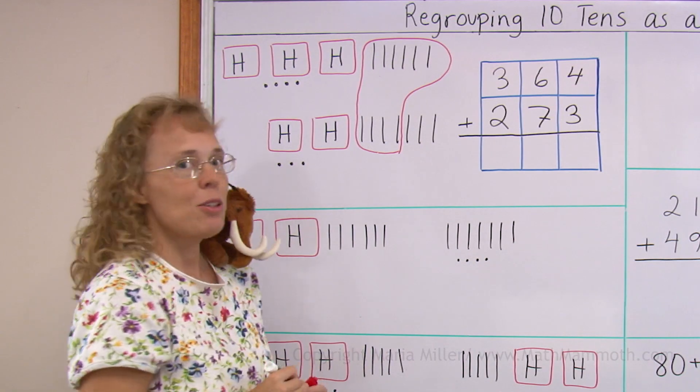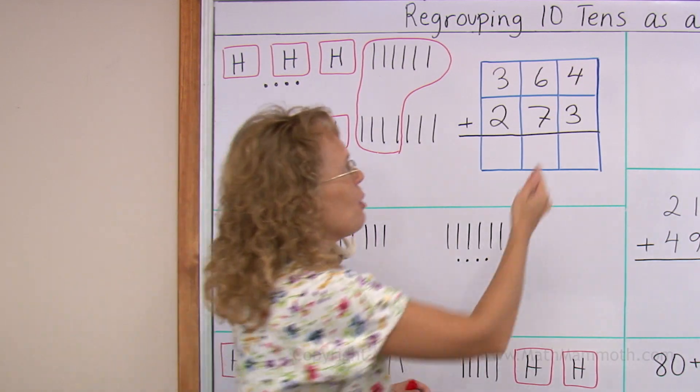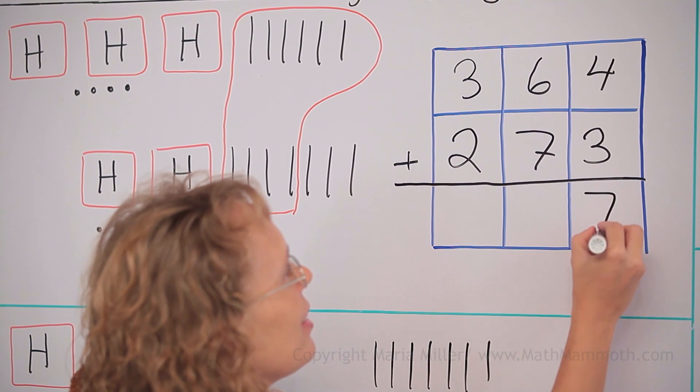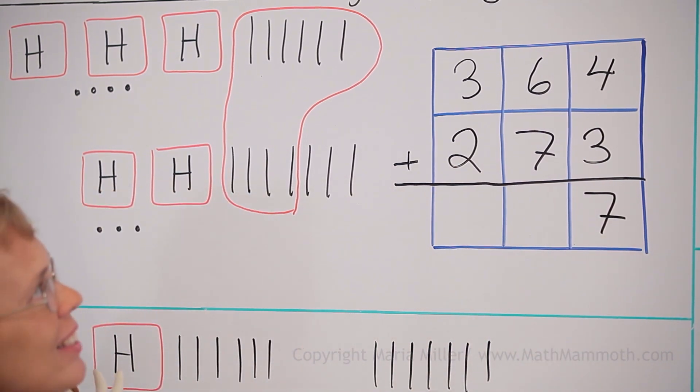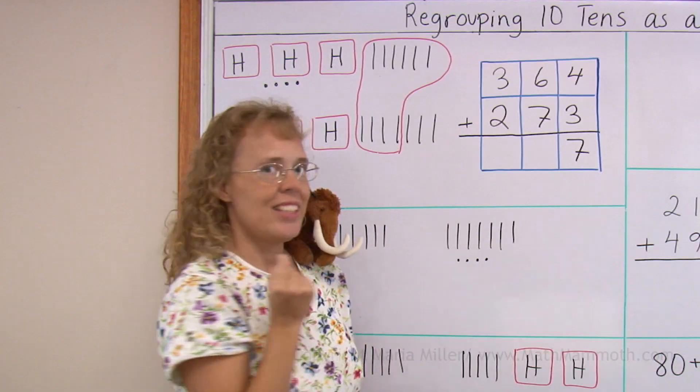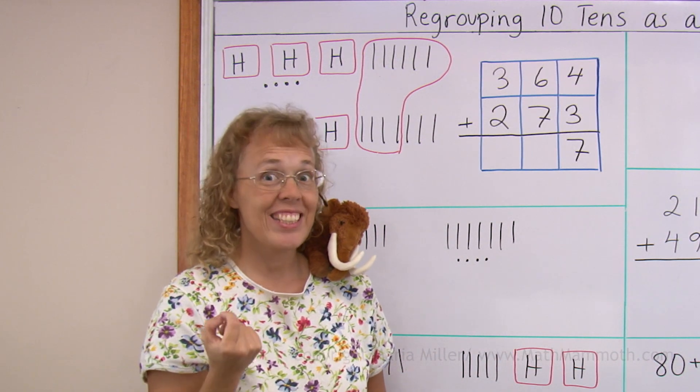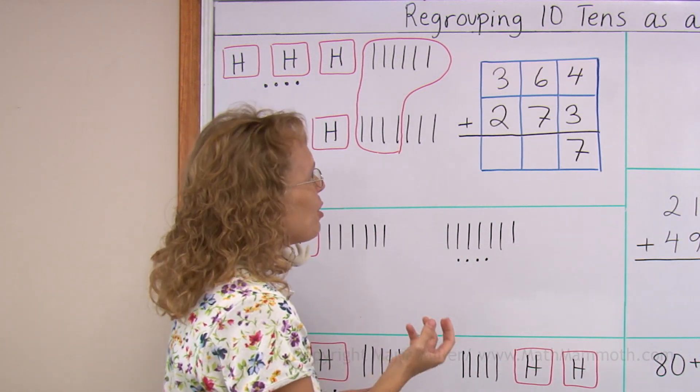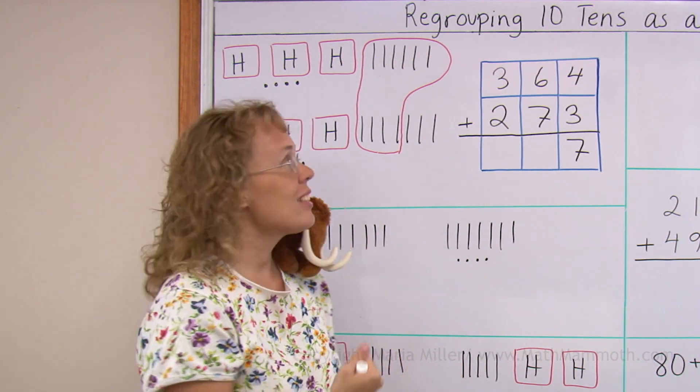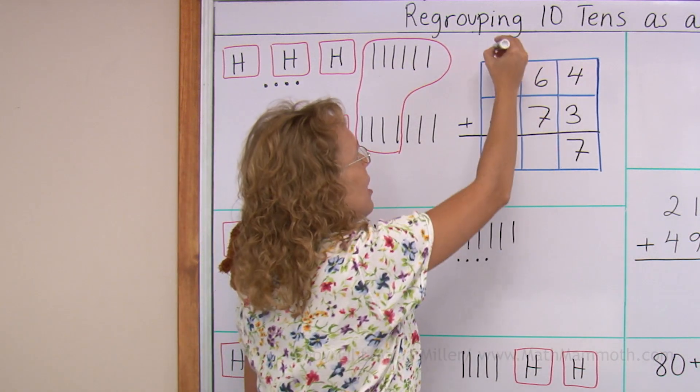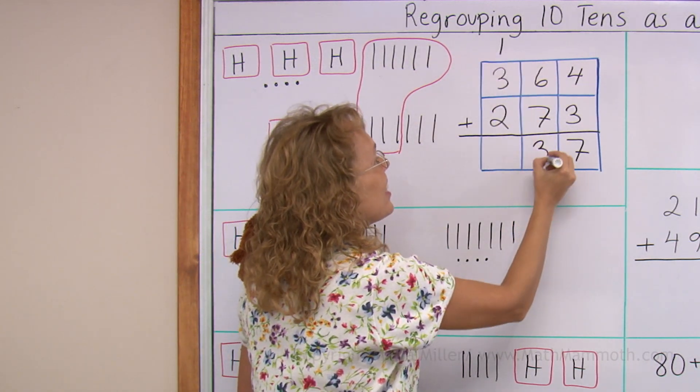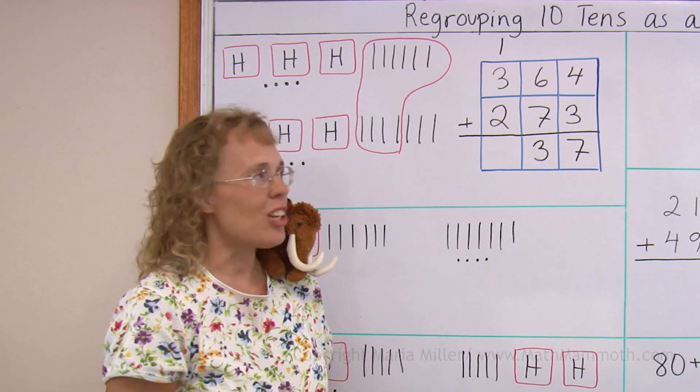Now when we add in columns, we add the ones, we get seven ones. We add the tens, six plus seven tens makes thirteen. Thirteen tens. And now we take ten of those tens and regroup them as one hundred, and then three tens stay there in the tens column.